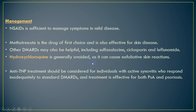The management of psoriatic arthritis is typically identical to that of rheumatoid arthritis. Non-steroidal anti-inflammatory drugs are sufficient to manage symptoms but provide only symptomatic relief and are not disease-modifying agents. Methotrexate is the drug of choice, similar to rheumatoid arthritis, and is also effective for skin disease. Other disease-modifying agents may also be helpful, including sulfasalazine, cyclosporine, and leflunomide.